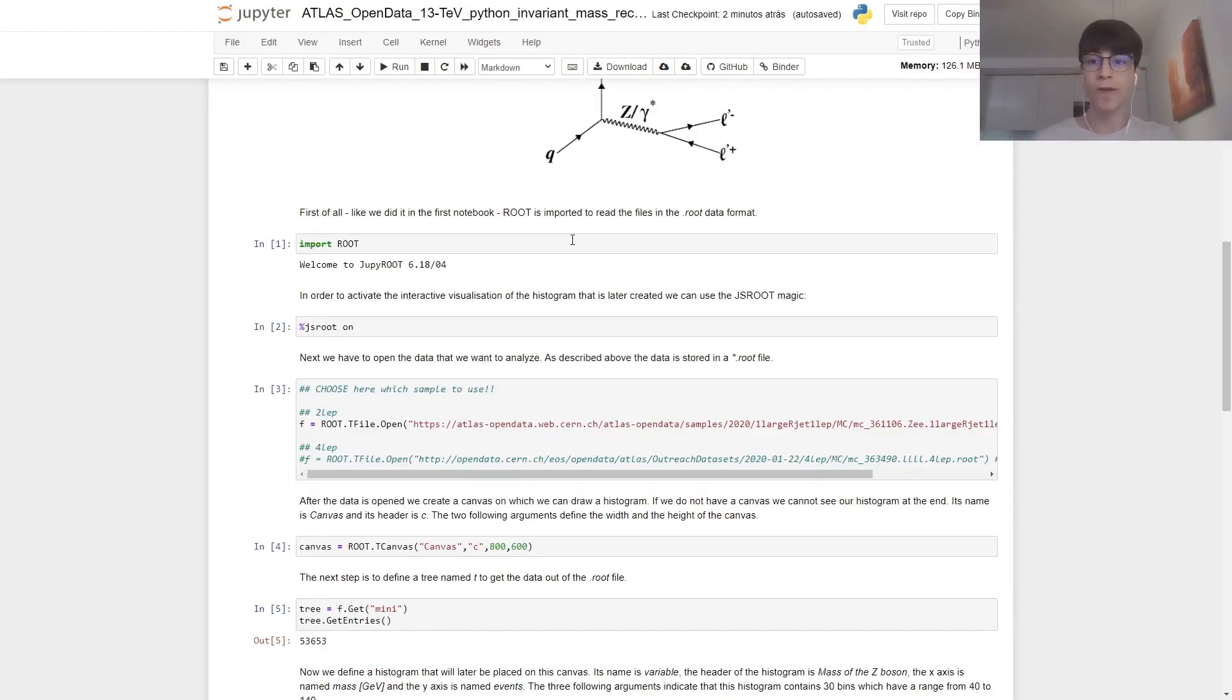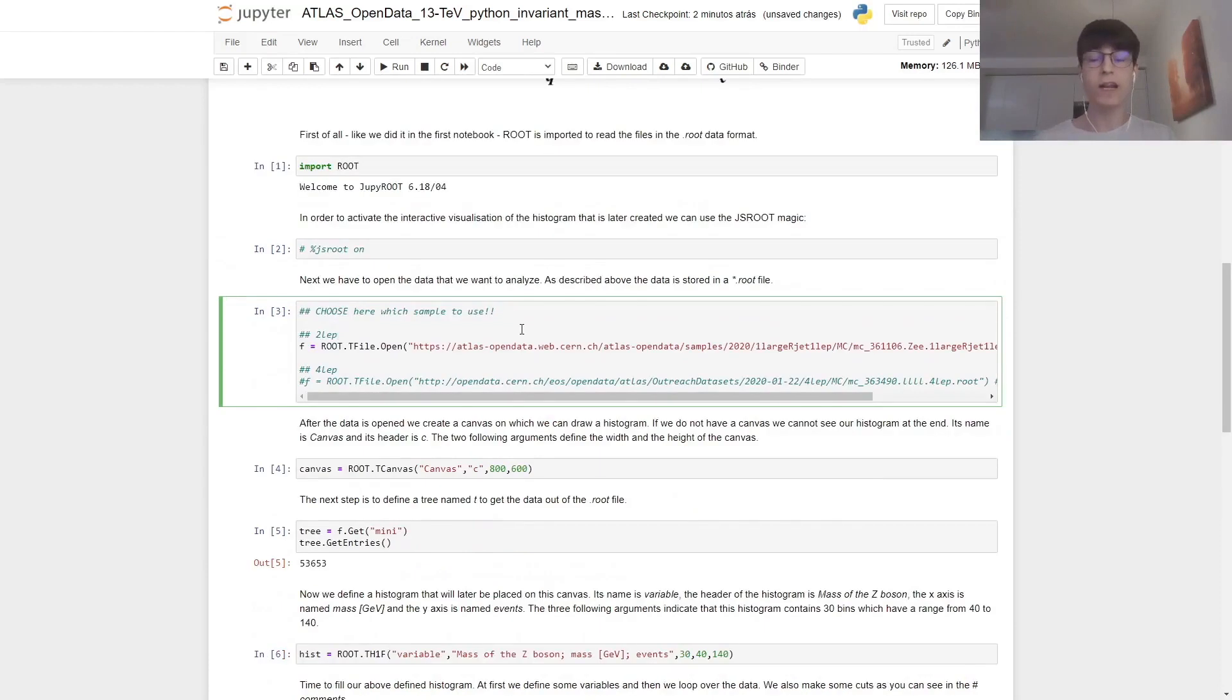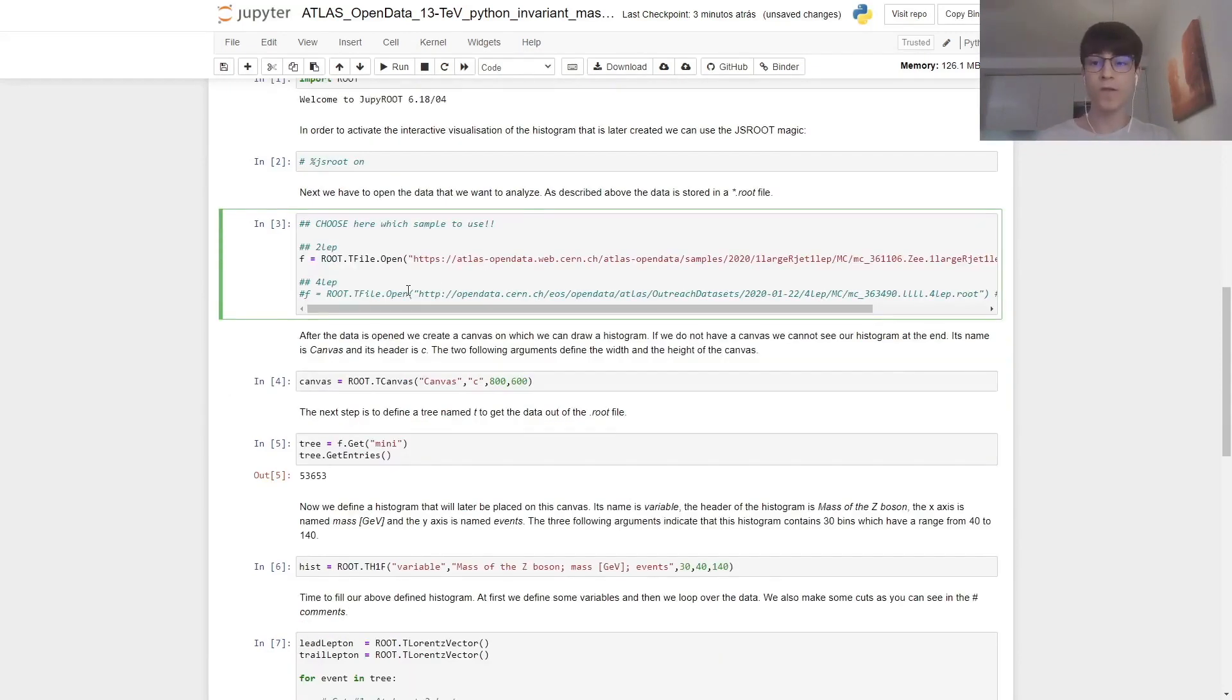As for any analysis using ROOT, we first import the library itself by writing import ROOT. This line allows for some interactivity with the plots, but if you find that it generates some bugs, you can comment it out like this. We then need to open the file with all the data we're going to use. We do so by declaring a variable f and then inside the ROOT library, getting TFile.Open and then writing as a string the address of our file. Below we see the file with four leptons, but let's use it with two leptons for this analysis.